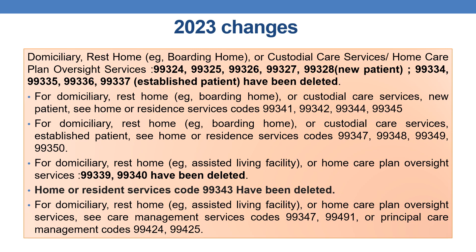Previously, there were CPTs for domiciliary, restroom or custodial care or home care plan oversight services. For new patients, the CPTs were 99324, 99325, 99326, 99327, and 99328.